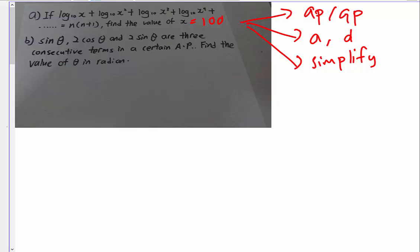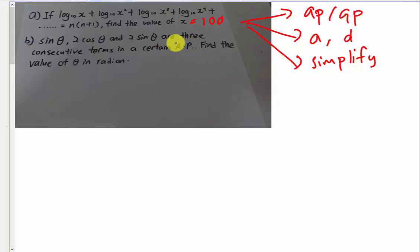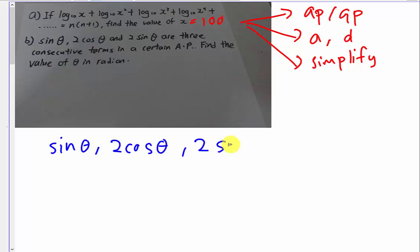For Part B, the question says that sin θ, 2cos θ, and 2sin θ are three consecutive terms of an arithmetic progression. Consecutive means continuous — first term, second term, third term in sequence. The question explicitly tells us this is an AP, and asks us to find the values of θ in radians. I'll assume sin θ is the first term, 2cos θ is the second term, and 2sin θ is the third term.